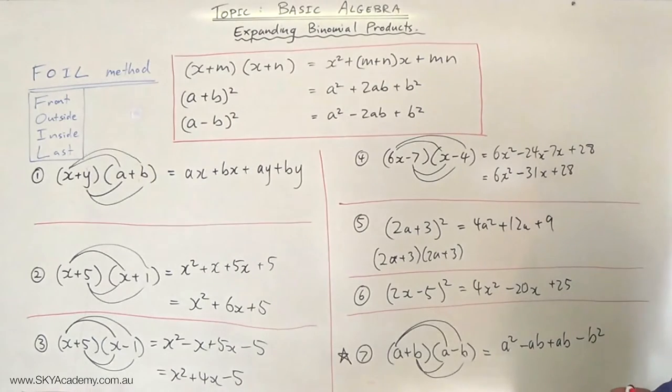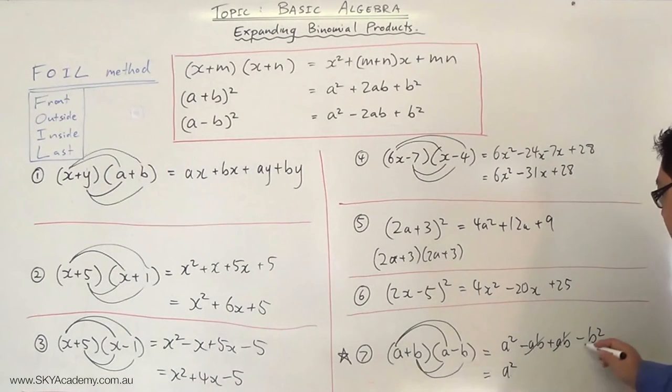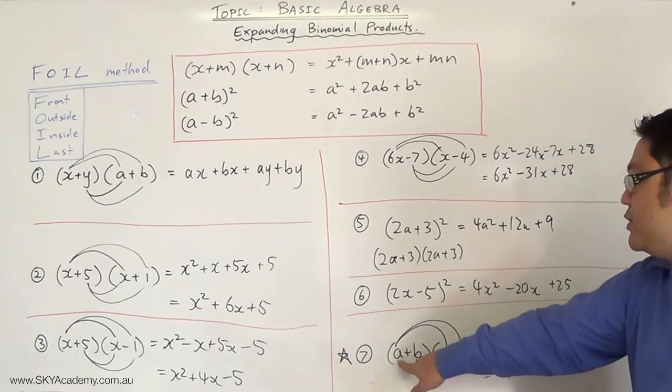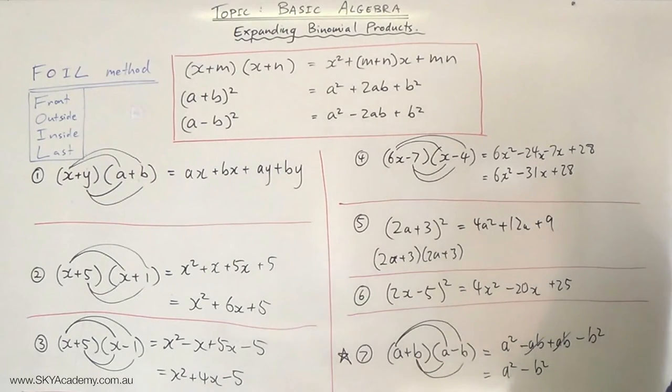Notice what happens here is that the middle two terms will cancel each other out because they're opposites of each other. These two will cancel each other out. So what you're left with is A² - B². What you've got is your front two terms squared minus your last two terms squared. So a sum by difference will result in the difference of two squares. And that is what I want you to understand.